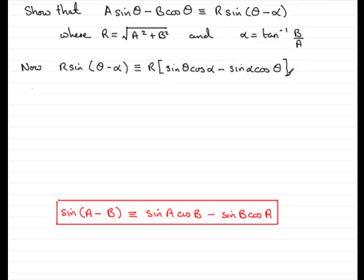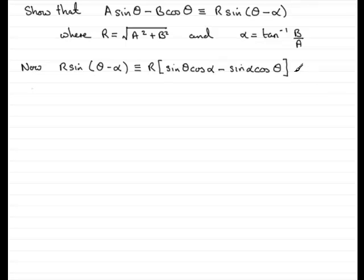All right. So, that's the expansion then of the sine of theta minus alpha. So, we'll just take this away now, and we'll carry on expanding this. So, if we expand the bracket, what we get is R sine theta cos alpha minus R sine alpha cos theta.